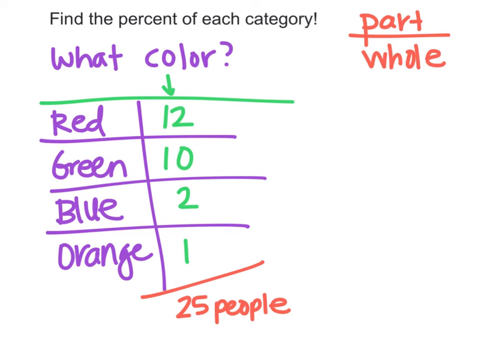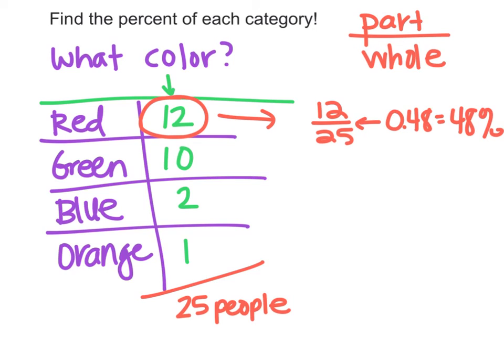If I want to figure out what percent of people chose red, I know 12 out of 25 people chose red. To find what percent that is, you divide. Take your calculator and type in 12 divided by 25, and that equals 0.48 which is 48%. So 48% of people chose red, almost half the people, and that makes sense - 12 out of 25 is about half. For green, 10 out of 25 people chose green. 10 divided by 25 gives me 0.4 which is the same as 40%. Remember, move your decimal over twice.